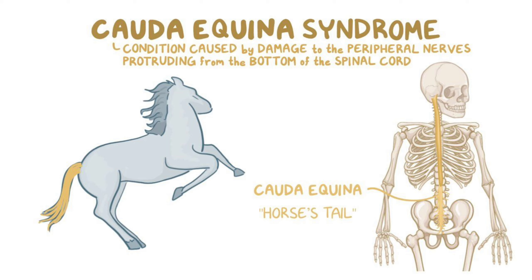The next important topic is cauda equina syndrome. This is very important. Features include sciatica — that means lower back pain going to the hips, buttock, and legs — saddle paresthesia, meaning numbness or loss of sensation in the private areas, and there may be urinary retention, urinary incontinence, fecal incontinence, or constipation. You have to urgently do an MRI and refer to orthopedics.